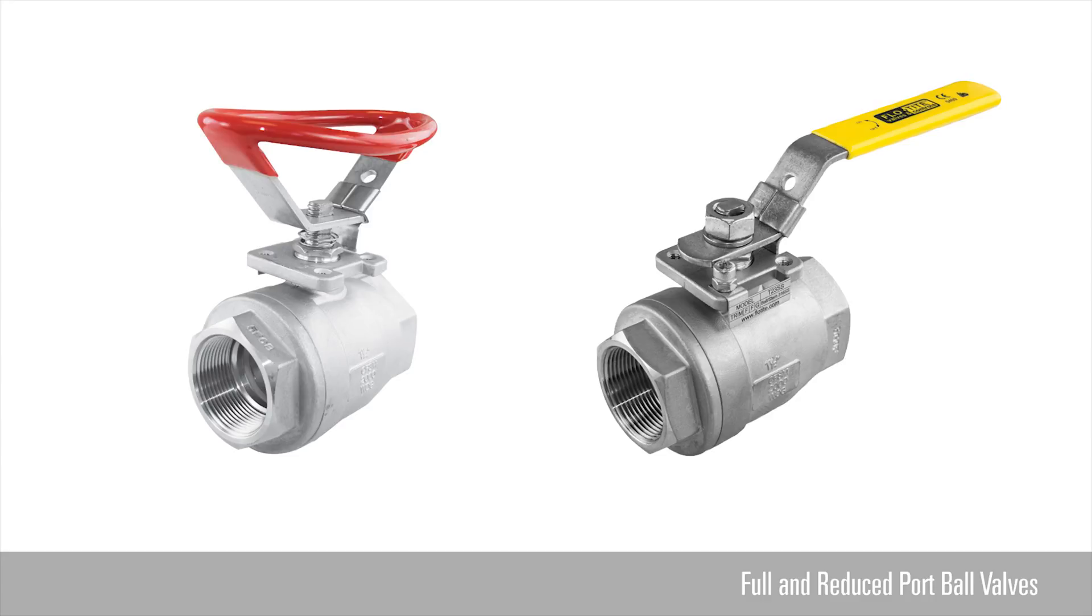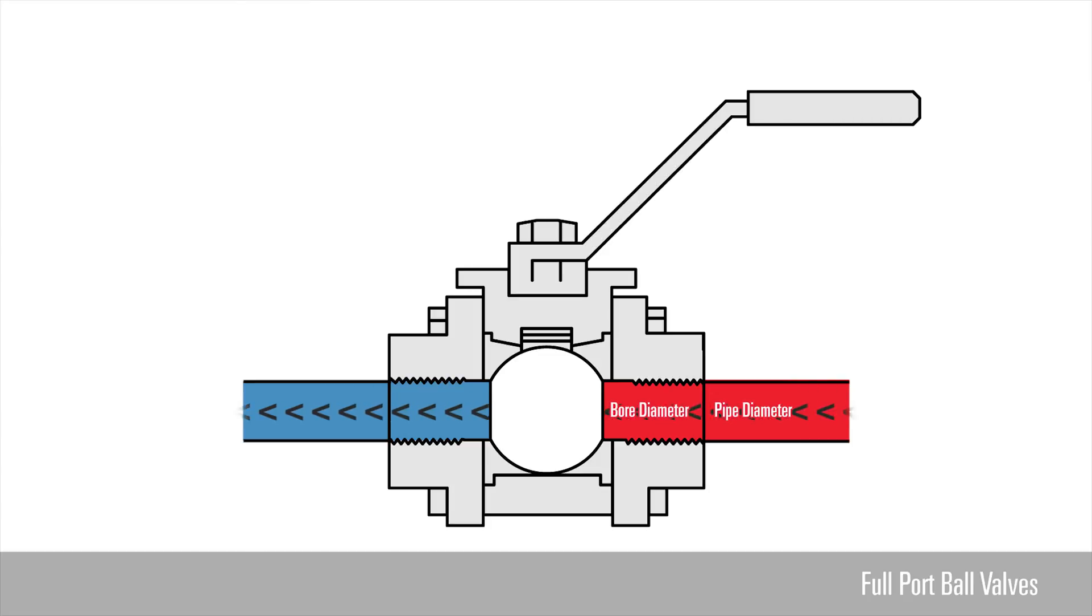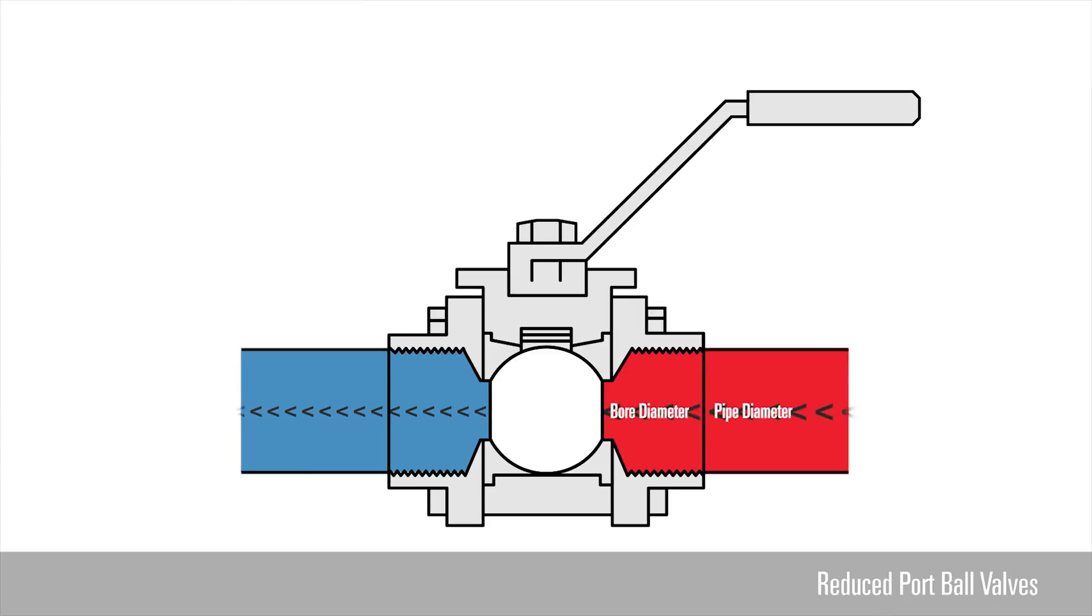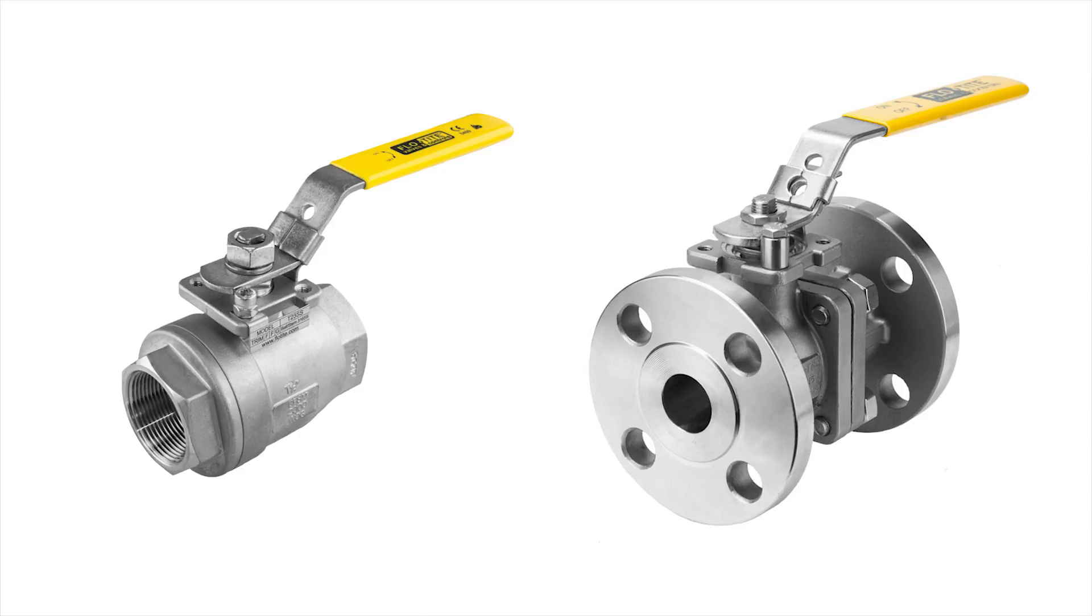Full and reduced port ball valves are used in many on-off applications in various industries to control flow. Full port ball valves have a bore diameter equal to the pipe diameter, which allows for little to no pressure drop across the valve. Reduced port valves have a bore diameter that is smaller than the pipe diameter. Examples include FlowTite threaded end ball valves and flanged end ball valves.